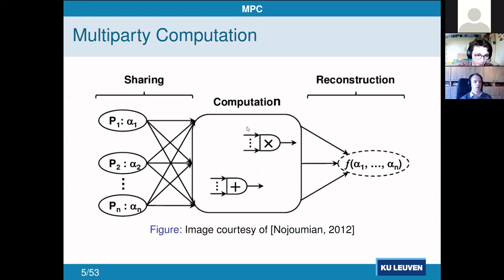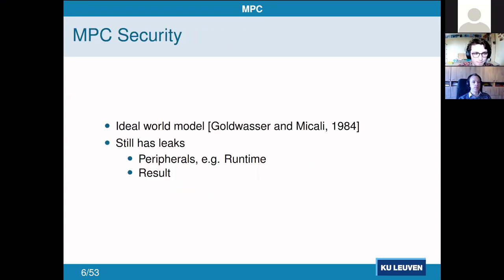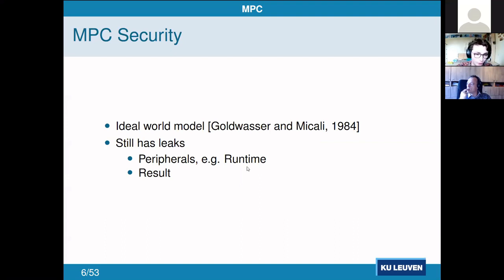Even if all of this is perfect and we get zero leaks on our secrets or computation, there are still issues. One model for assessing MPC security is the ideal world model: an MPC method is secure if any attack that works on it also works in the ideal world — where everybody hands their secret to a trusted third party, who does the calculations privately and returns the answer. Even in this ideal world, the runtime and the result can leak information.